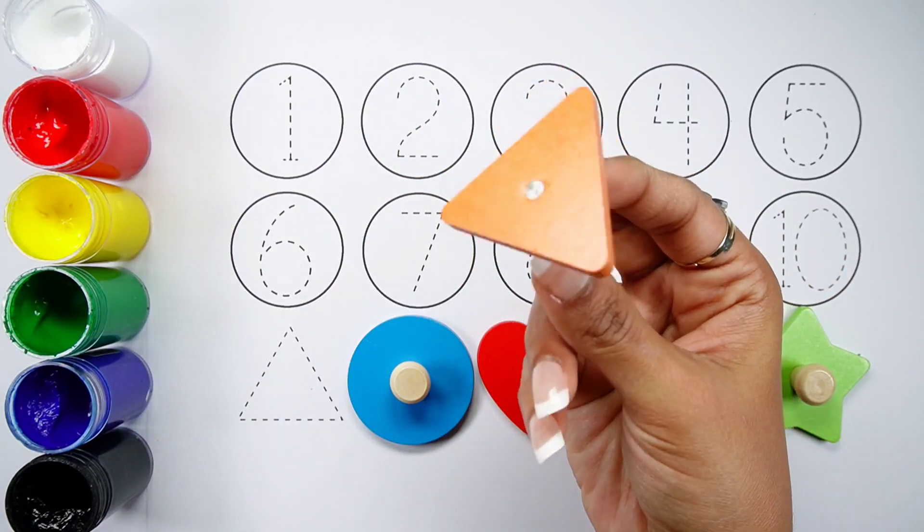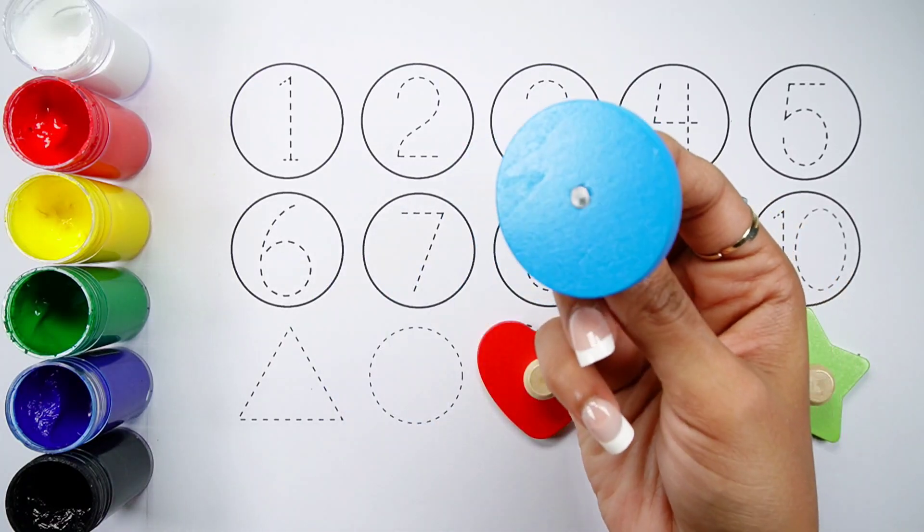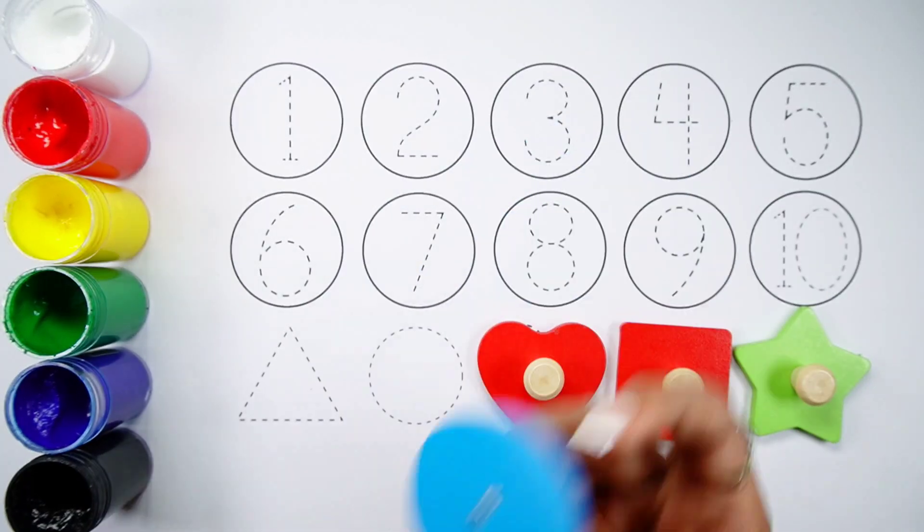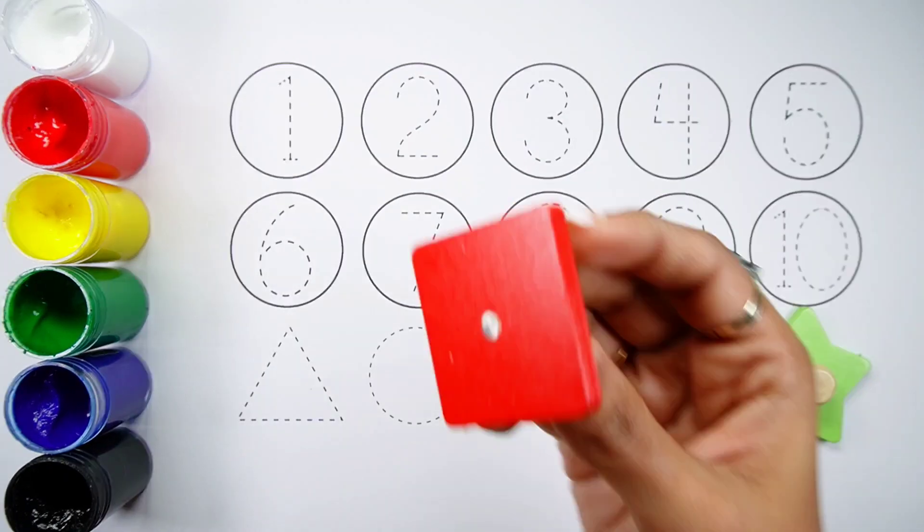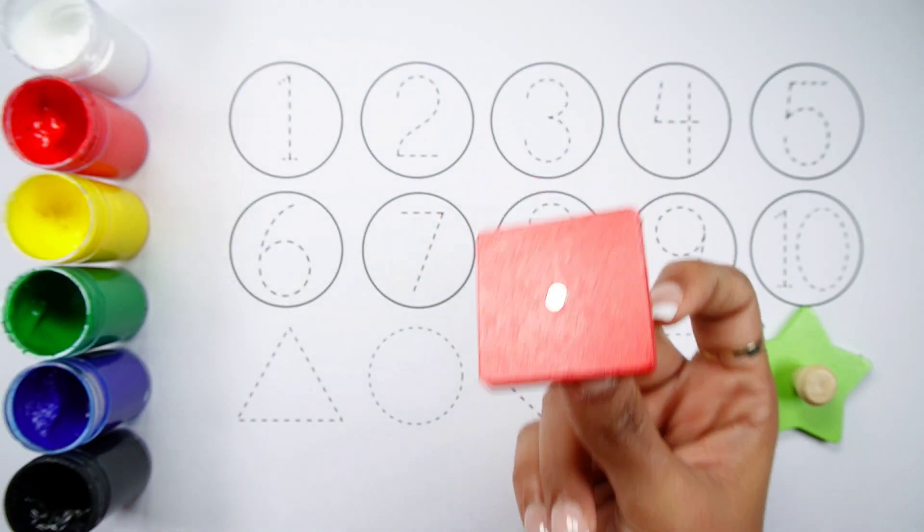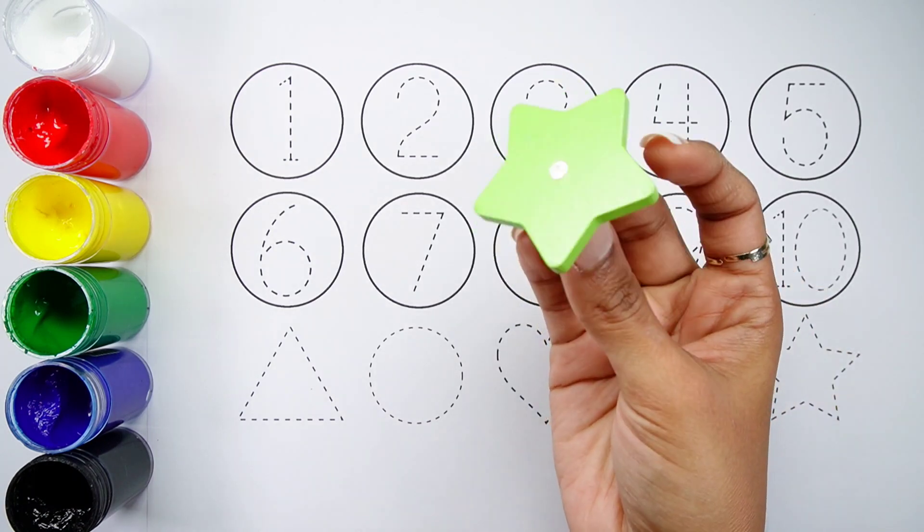Triangle, an orange triangle. Circle, a blue circle. Heart, a red heart. Square, a red square. Star, a green star.